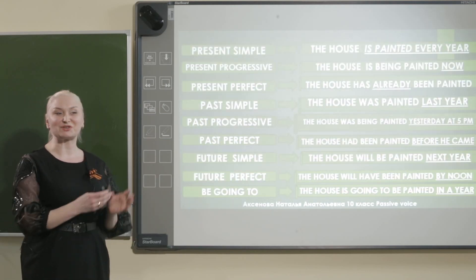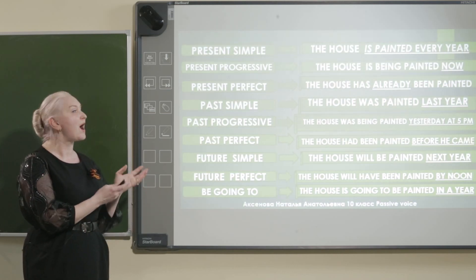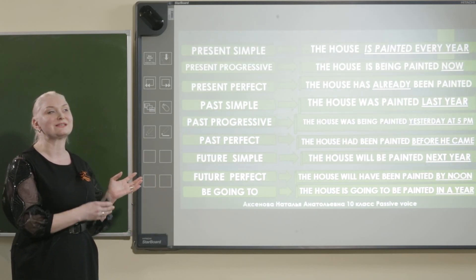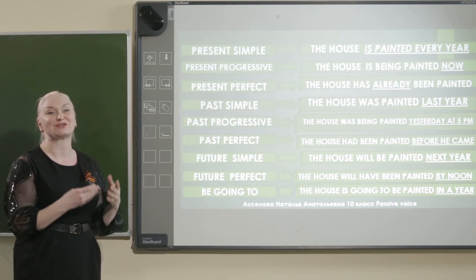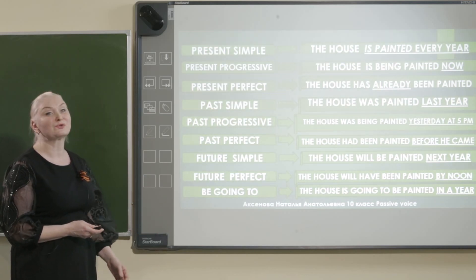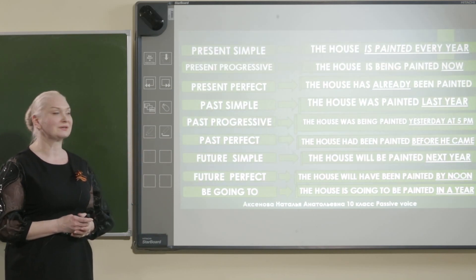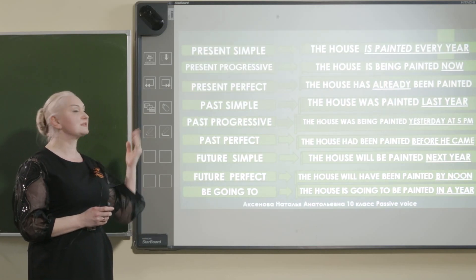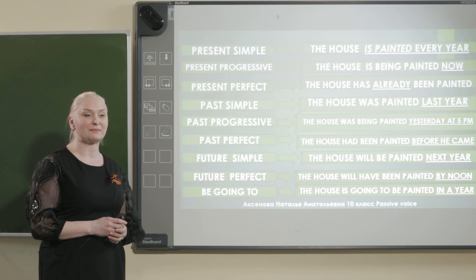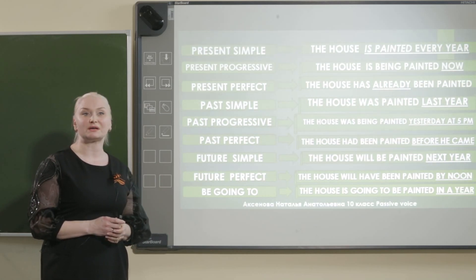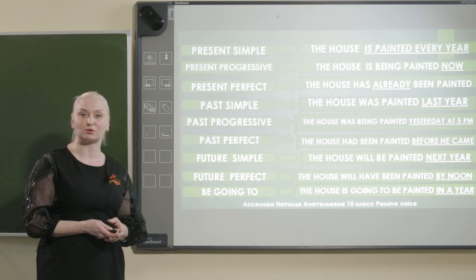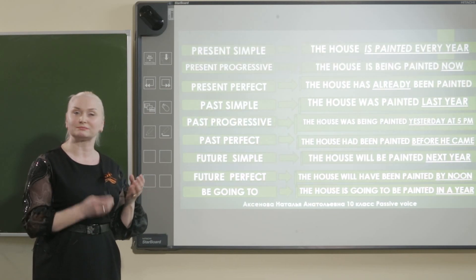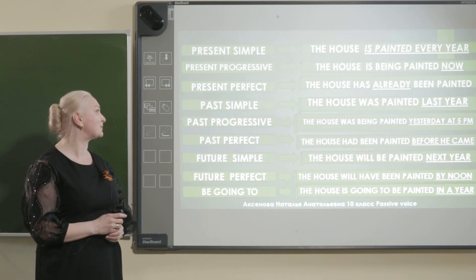This is a huge table of different tenses showing how passive voice should be used. It's necessary to know all tenses of English in order to use passive voice in a fluent way. Смотрим на структуру грамматических выражений. Present simple — настоящее простое время: the house is painted every year — дом красят каждый год. Past simple: the house was painted last year — дом был покрашен в прошлом году.